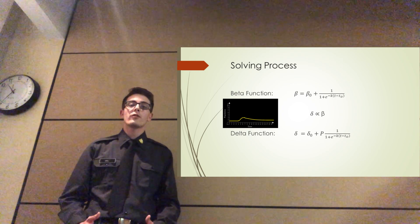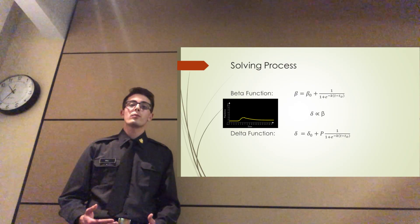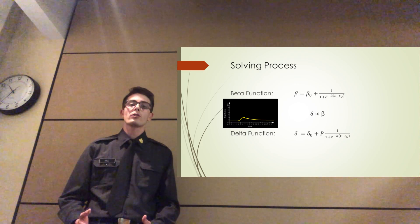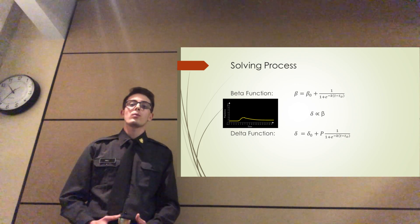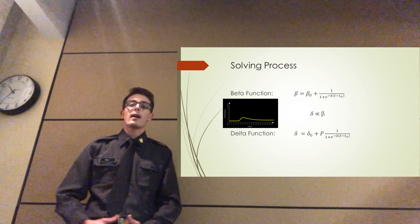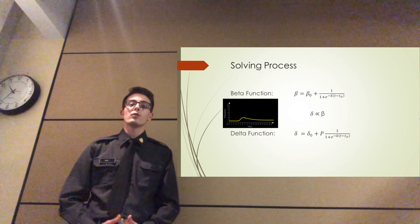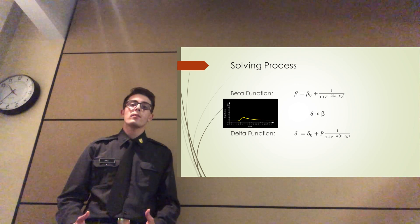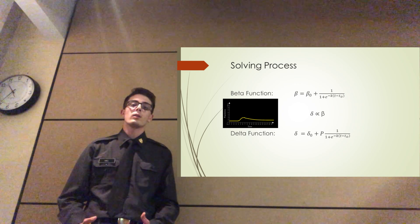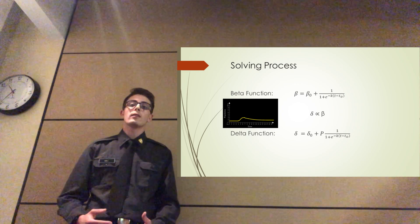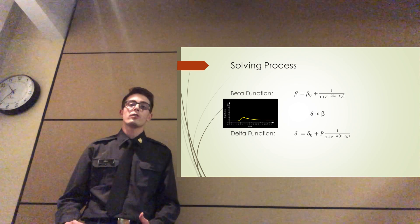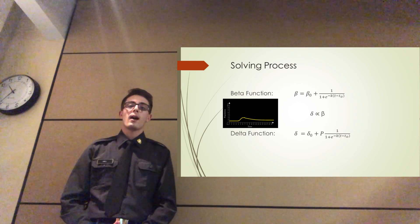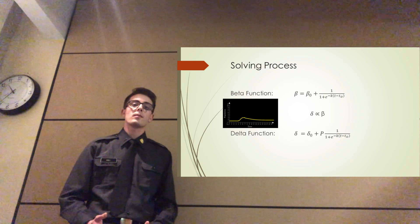We represented this change of beta with an initial condition at first, before the arrival of humans. At the arrival of humans, we're going to add in a logistic growth function, because that change we believe is going to happen gradually over time, as the prey interact with humans and lose those anti-predator responses. And then after some set of time, humans are going to leave the environment. And very gradually, there's going to be a negative logistic model to return to that initial condition as the prey relearn those anti-predator responses that they had known previously. And then the model for delta is extremely similar, just multiplied by some proportionality constant.